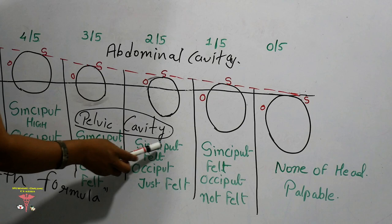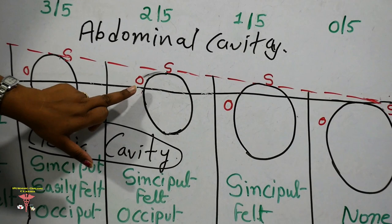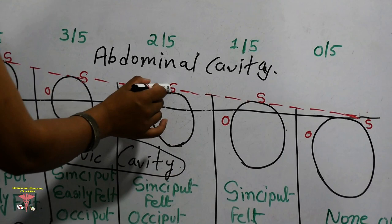At 2/5, the sinciput can be felt and the occiput is just felt. The occiput is now very close to the pelvic brim region. The sinciput can be felt, and while the occiput can still be felt, it is at the level of the pelvic brim.